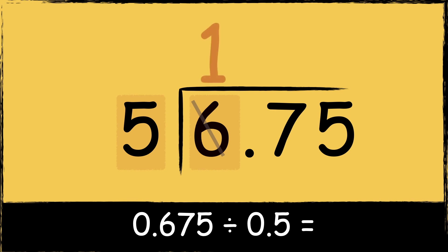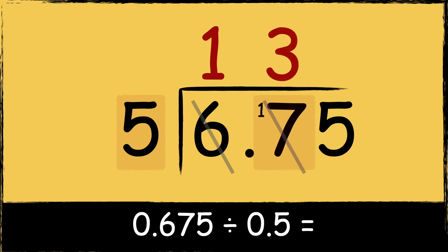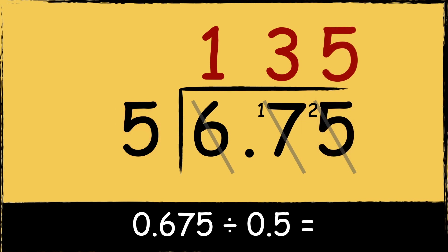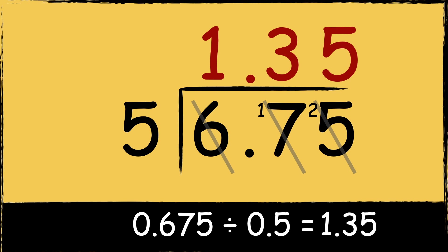Five goes into six once with one left over. Five goes into 17 three times with two left over. Five goes into 25 five times. In this example the dividend has two digits after the decimal place, so we need to make sure that the answer also has two digits after the decimal place. So the answer is 1.35.